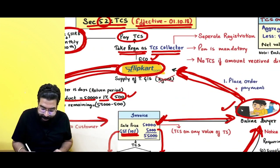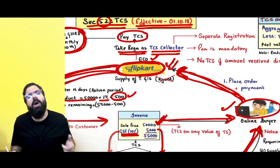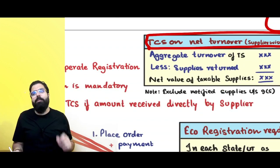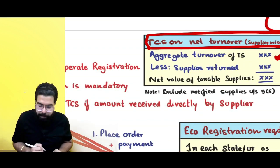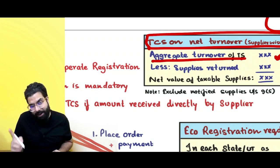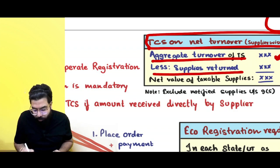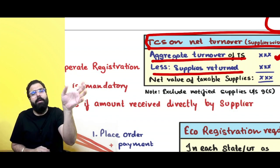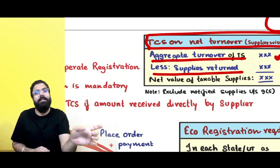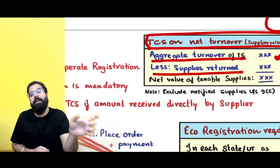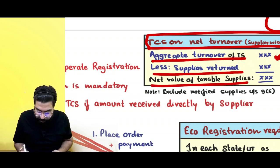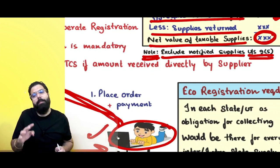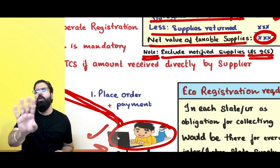TCS shall be deducted on the net turnover, supplier-wise. If a supplier has supplied 10 lakh rupees through Flipkart as aggregate taxable supplies through the e-commerce operator, minus the supplies which are returned — because in e-commerce many returns happen — then TCS will be deducted only on the remaining supplies. For example, 10 lakh supplied minus 5 lakh returned equals 5 lakh net value of taxable supplies on which TCS is deducted. Also remember: for notified supplies under Section 9(5) — housekeeping, accommodation, and transportation — there is no TCS.